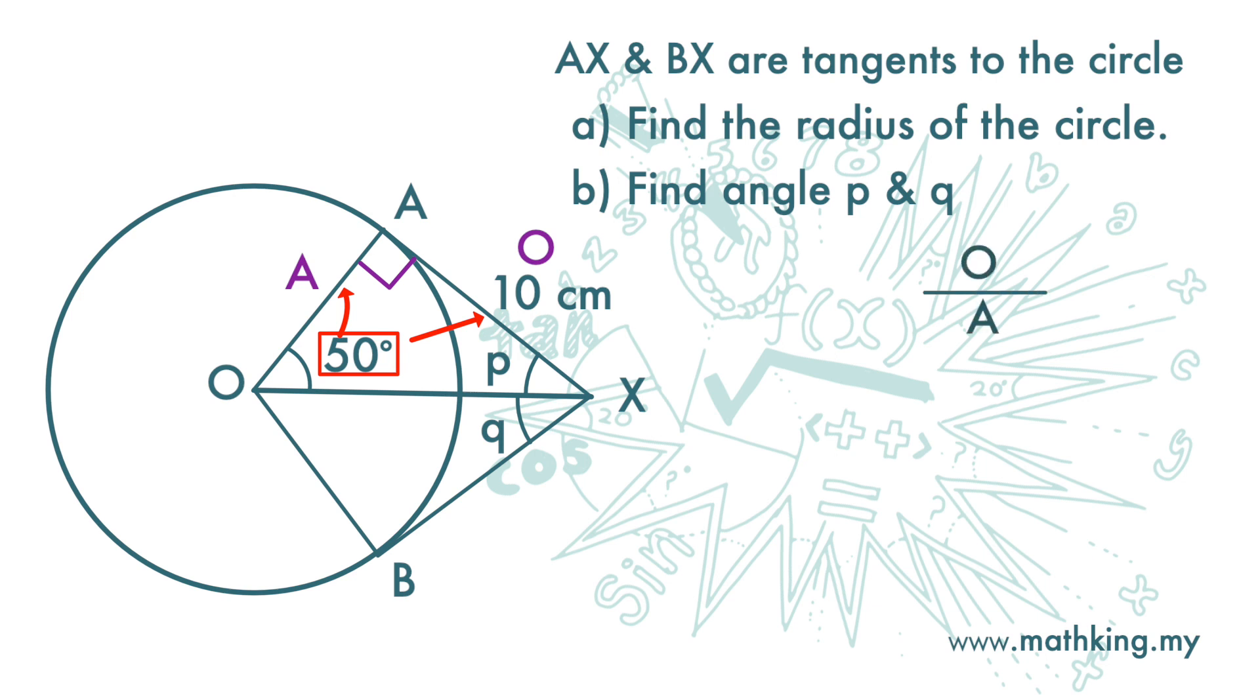Opposite over adjacent is the trigonometric ratio of tangent. So we are going to use tangent to find the radius of the circle.